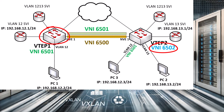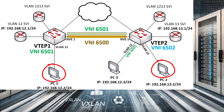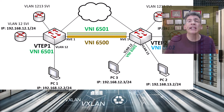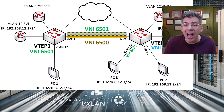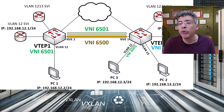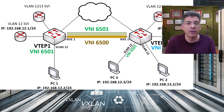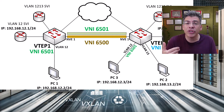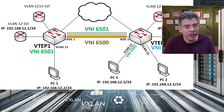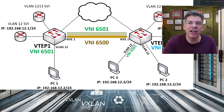Because VNI 6502 exists only on VTEP2, VTEP1 can remain completely oblivious to it, and still allow communication between PC2 on VNI 6502 and PC1 on VNI 6501. Until now, we've been configuring a transit VNI wherever we wanted to employ routing in a VXLAN topology. Initially it may have seemed superfluous, but now you know why it is preferable — because symmetric IRB can be employed, which is more scalable and more intuitive than asymmetric IRB.